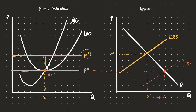At long-run equilibrium, even if demand shifts to the right to D1, that will prompt an increase in long-run supply equal to a new long-run supply curve. Since the individual firm is already at the minimum point of its long-run average cost curve, we can derive what is known as the long-run market supply curve — which is simply a horizontal straight line at price P*. This is your long-run market supply curve.